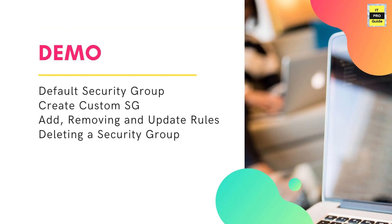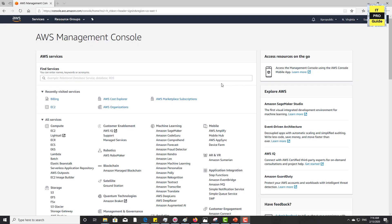Let's move to the demo session. What we're going to do is first have a look at the default security group, then create a custom security group, then see how to add, remove, and update rules, and then spin up an instance with the custom security group we've created. Let's log in to the AWS Management Console.